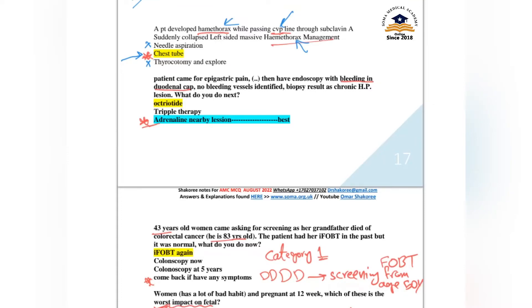A patient came for epigastric pain, then had endoscopy with a bleeding antral ulcer cap, no bleeding vessels identified. Biopsy result shows chronic H. pylori infection. What will you do next? Adrenaline nearby the bleeding lesion.